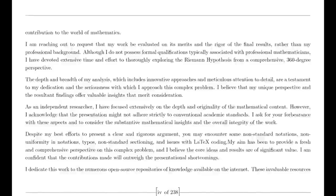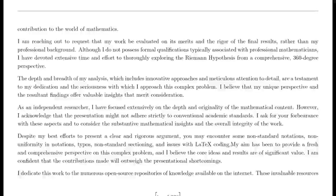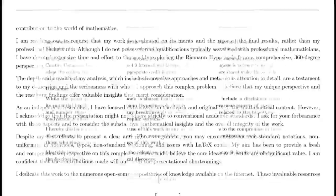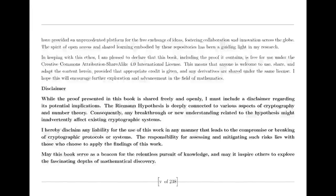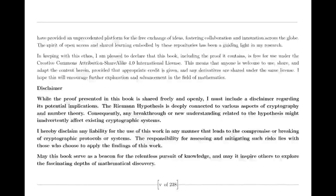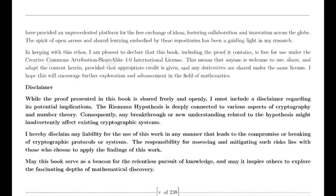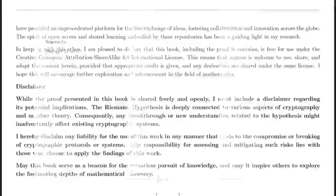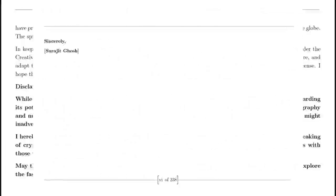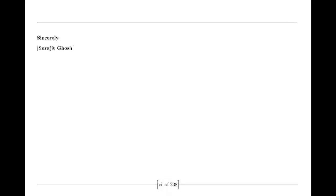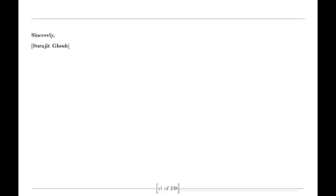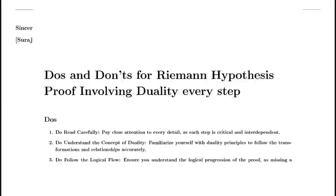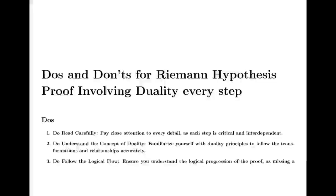Fast forward to the early 19th century, when another mathematician, Bernhard Riemann, took Euler's work and breathed new life into it. In a groundbreaking paper, Riemann extended the concept beyond the realm of real numbers, daring to imagine the zeta function in the complex plane. He proposed a connection between this enigmatic function and the distribution of primes, a revelation that sent ripples through the mathematical community.